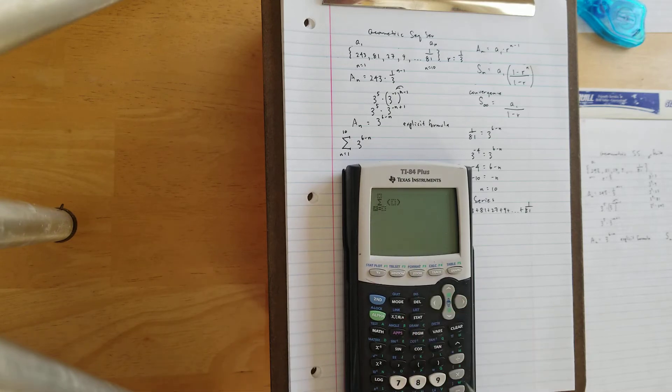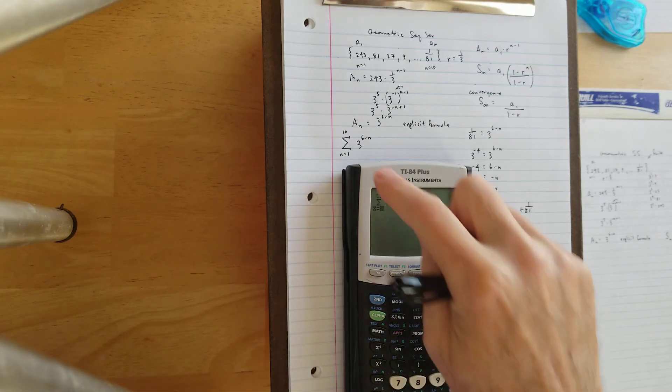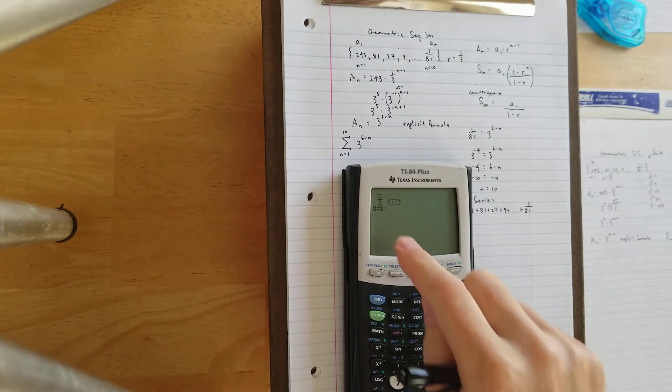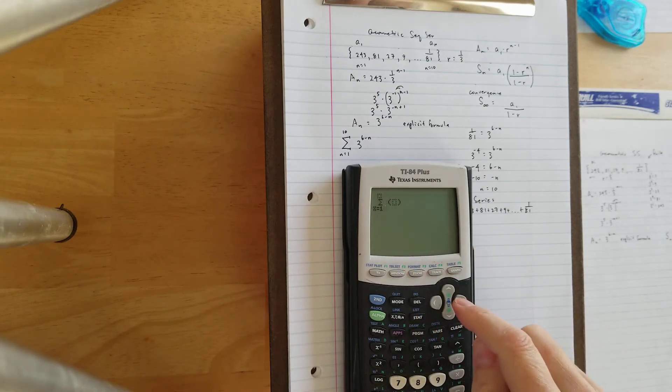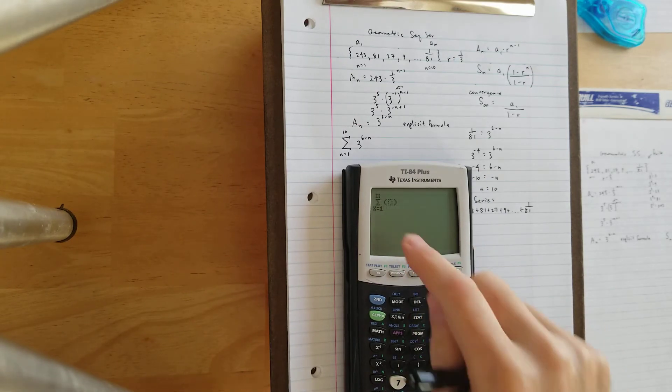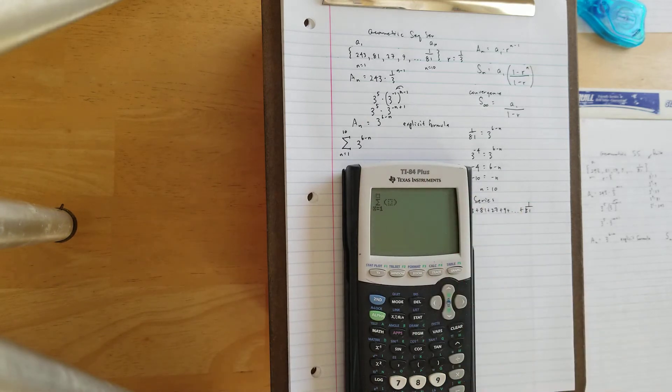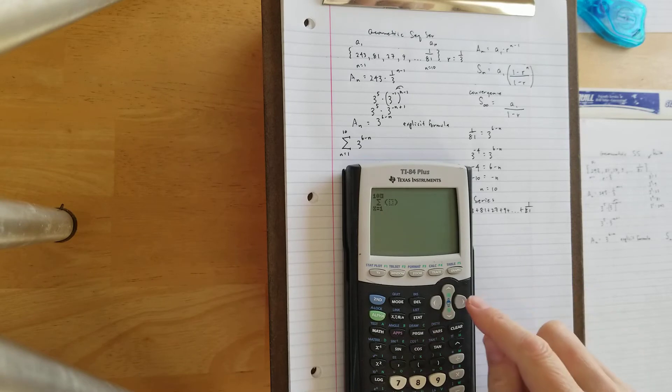We're going to plug in x for n, and then 1 for the subscript of the first term. And then we're going to just keep on moving this thing around. The upper index or upper limit is going to be 10.